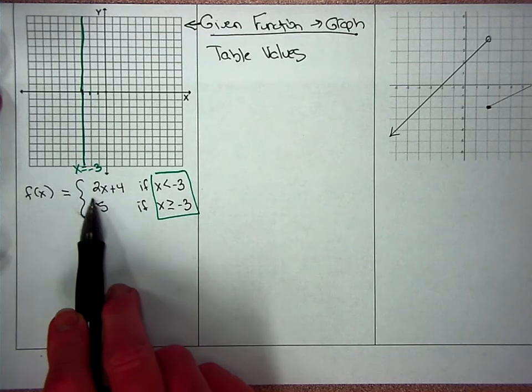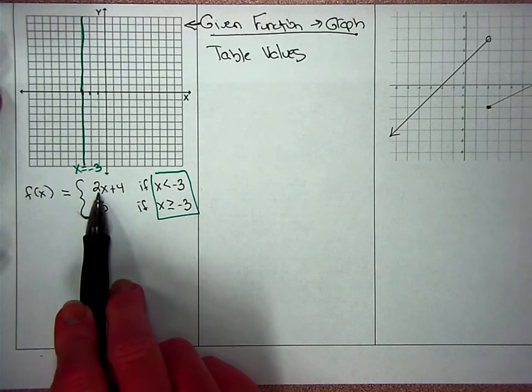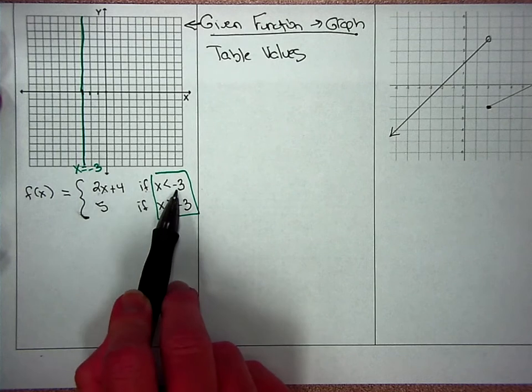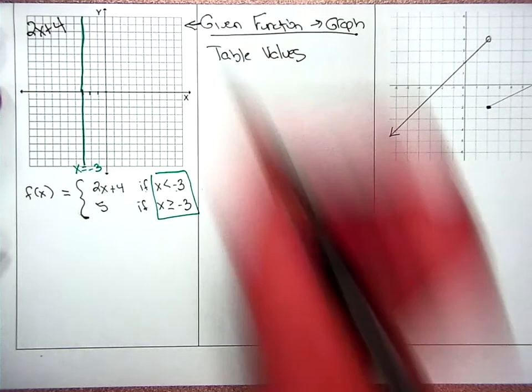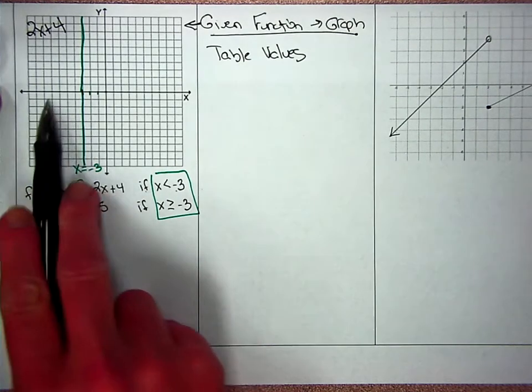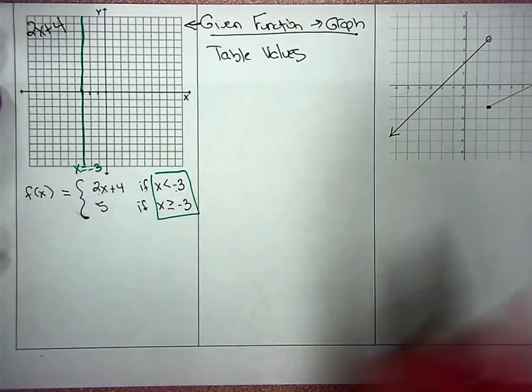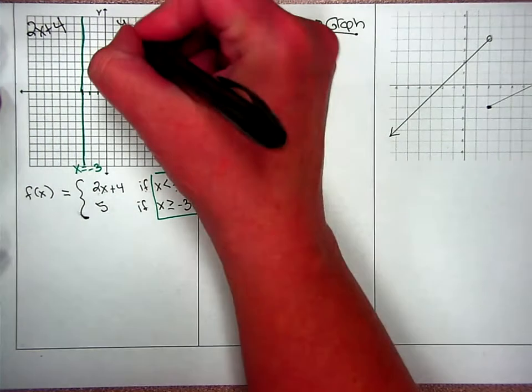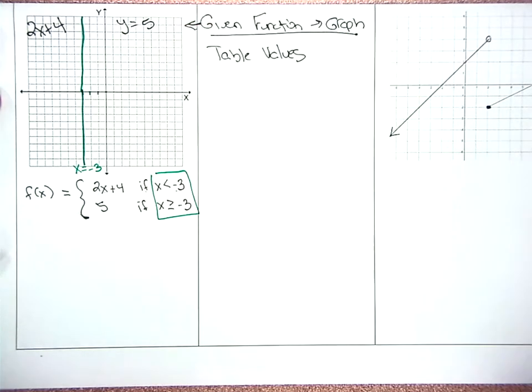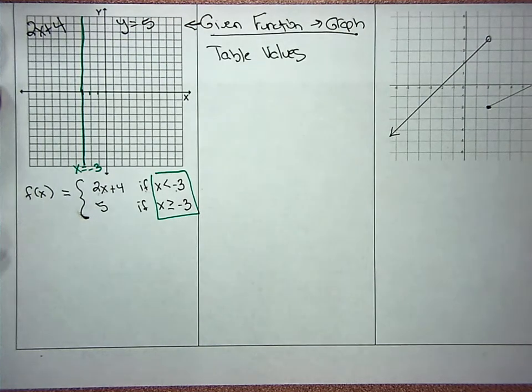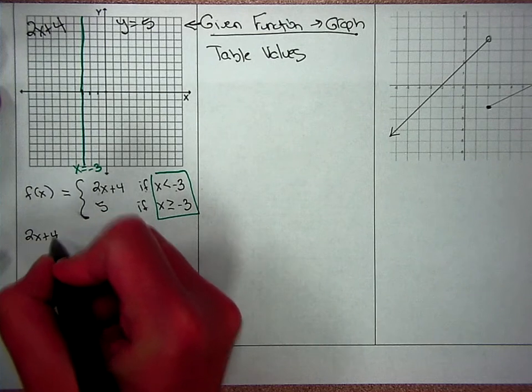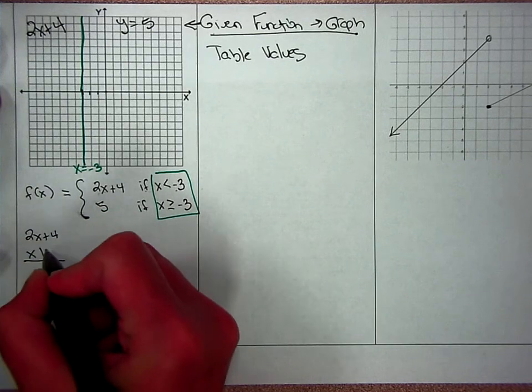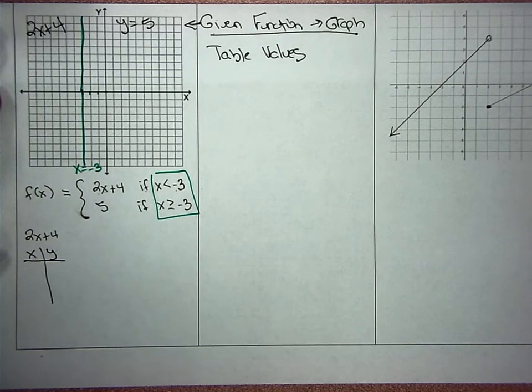This says you're going to have 2x plus 4 function if x is less than negative 3. So less than is on the left side of that. On the left side, I'm going to have that function. And then on the right side, you have the function y equals 5.